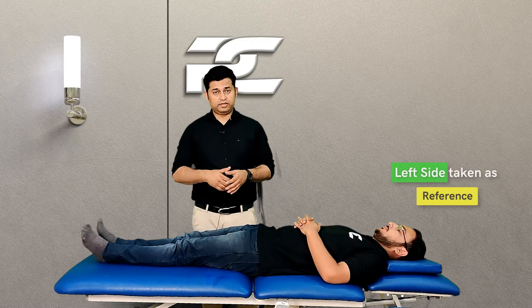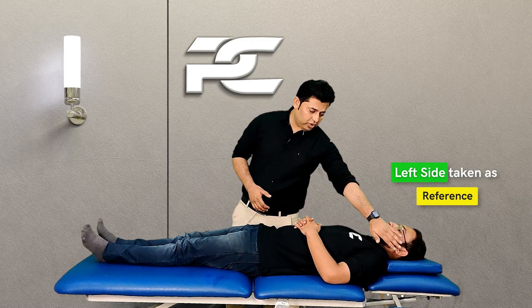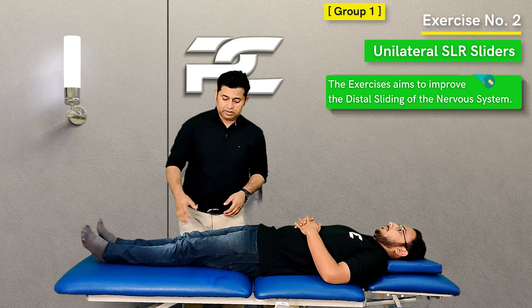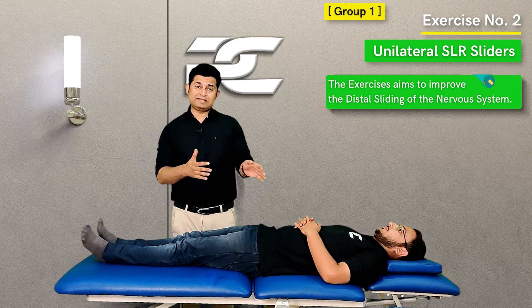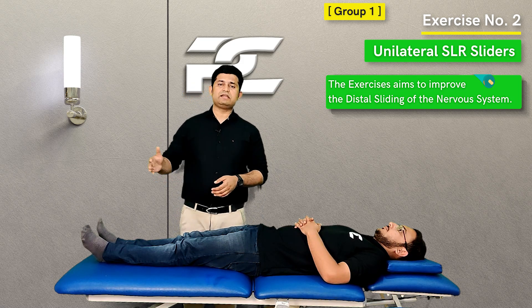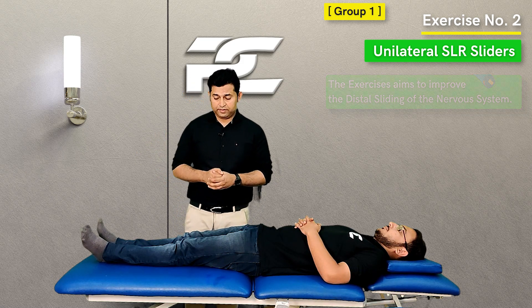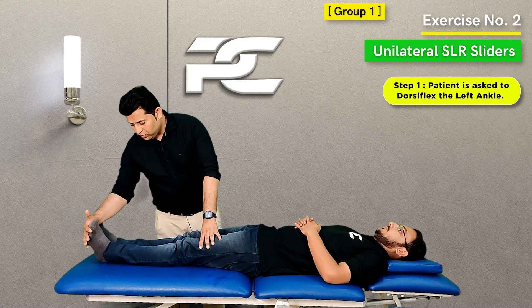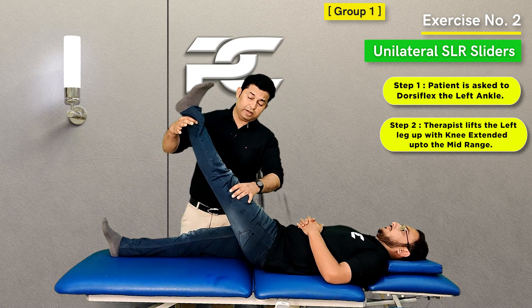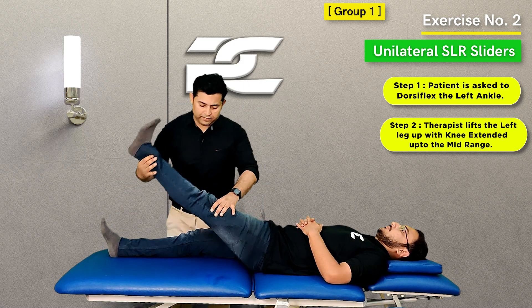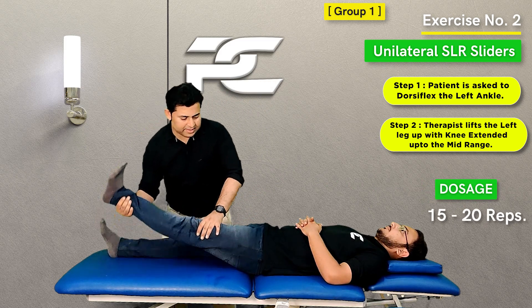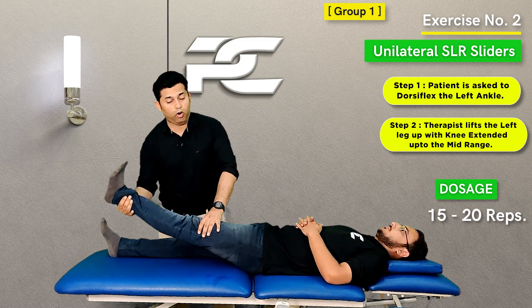Now, assuming that this patient has left-side dominant cervicogenic headache, the second exercise is going to be the unilateral SLR sliders. Again, the intention is to improve the distal sliding mobility of the nervous system. We are going to dorsiflex the left-side ankle and at the same time move the leg into the mid-range of SLR movement. 15 to 20 such repetitions are going to be performed.